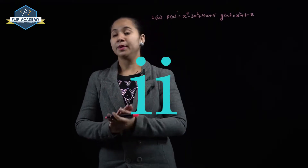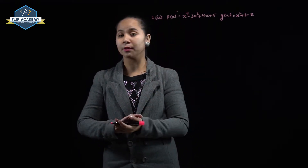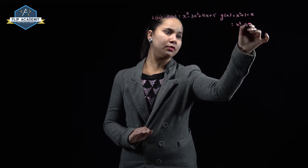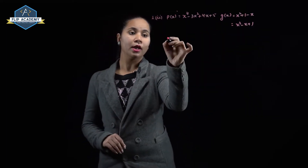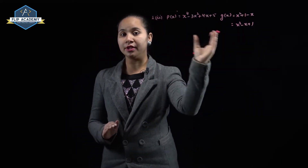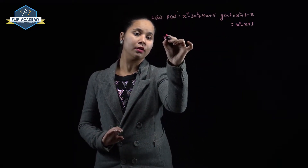Second part: p(x) = x⁴ - 3x² + 4x + 5 and g(x) = x² + 1 - x. We arrange g(x) in descending order of degrees: x² - x + 1. Now we divide g(x) into p(x).